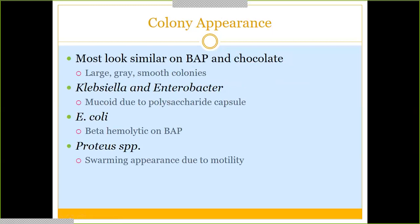Colony appearance: gram-negative rods typically produce larger, gray, smooth colonies that all look fairly similar to each other. Two organisms worth noting specifically are Klebsiella and Enterobacter — I hadn't mentioned them yet, but they're common in the lab and part of Enterobacteriaceae. Their key characteristic is that they are very mucoid — they have a polysaccharide capsule that makes them look really mucus-like on a plate, almost like snot.